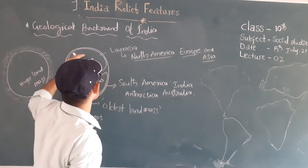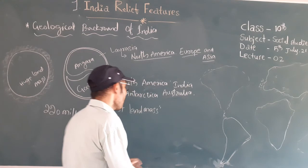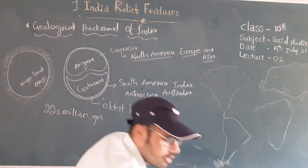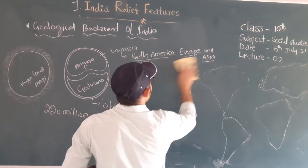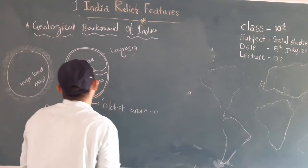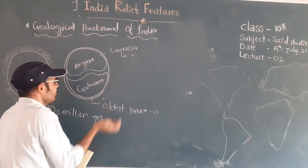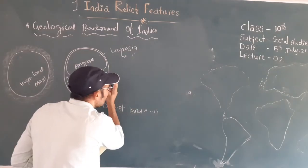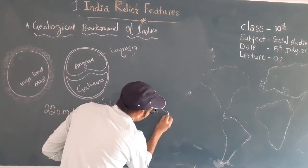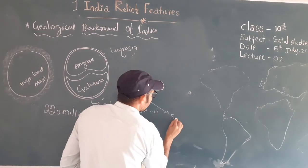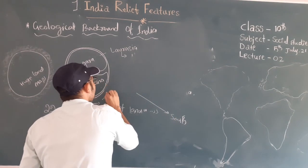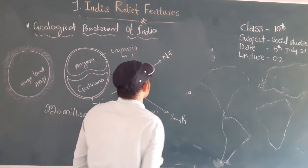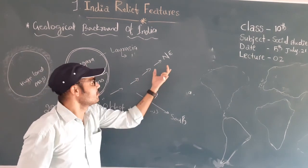After this splitting, the Indian peninsular moved towards the north-east side. When the Gondwana land split, the Indian peninsular and Australian peninsular initially moved together. Then the Australian plate moved south, while the Indian peninsular moved towards the north-east side to its present position today.